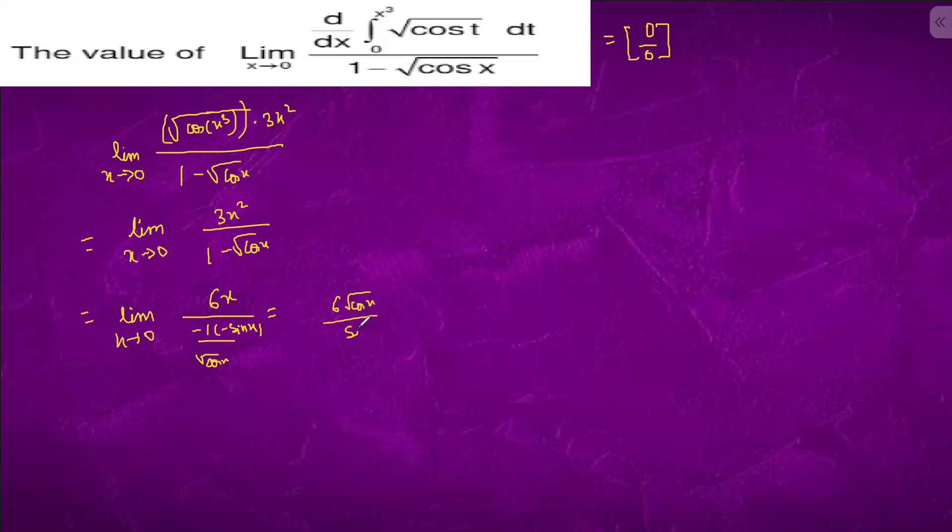And this is sin x upon x, so this is 1. And limit x tending to 0, this is 1. So this is also 1, so the answer is 6 for this question.